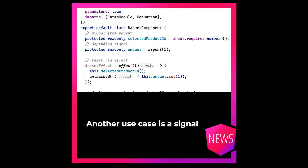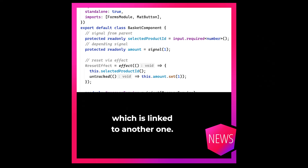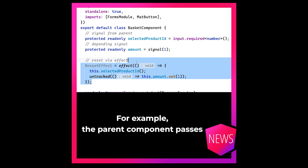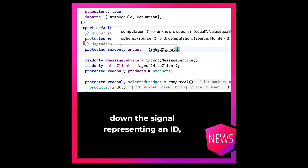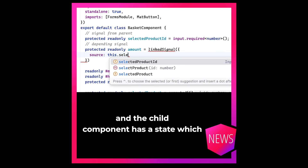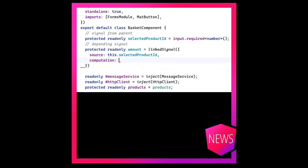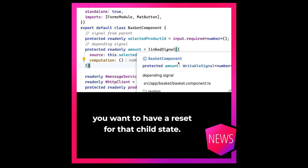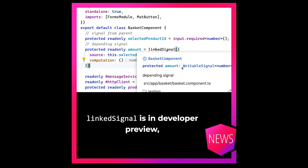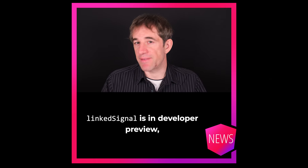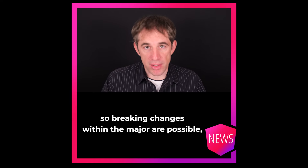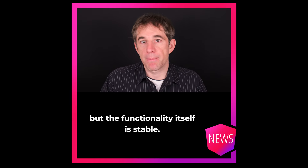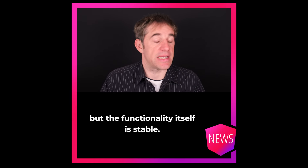Another use case is a signal which is linked to another one. For example, the parent component passes down the signal representing an ID, and the child component has a state which is linked to that ID. Once the ID changes, you want to have a reset for that child state. Linked signal is in developer preview, so breaking changes within the major are possible, but the functionality itself is stable.